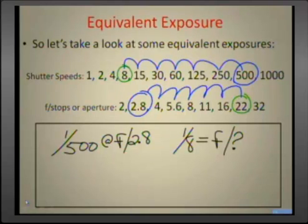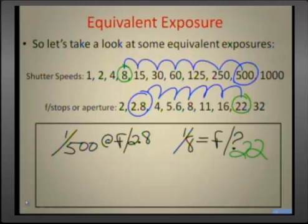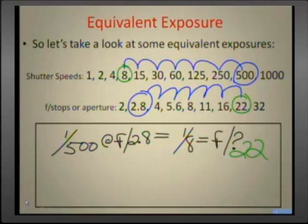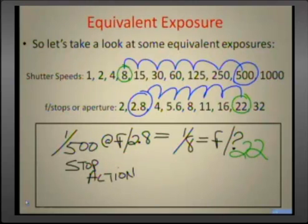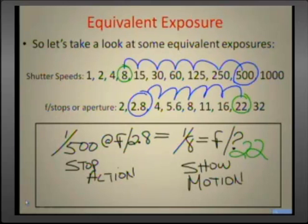The answer is f22. So a 500th at f2.8 equals 1/8th of a second at f22. The difference between these two photographs is that the 500th will be stop action, and the photograph at 1/8th at f22 will definitely show the motion — in this case, the motion of the water.